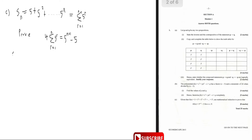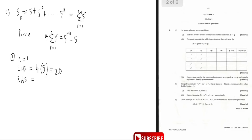Step one: test n = 1. The left-hand side is 4 × 5 = 20. The right-hand side is 5² - 5 = 25 - 5 = 20. Both sides equal 20, so n = 1 is true.